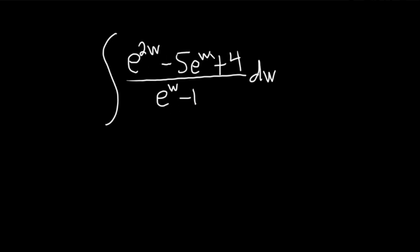So you'll notice that up here we really have a quadratic equation in e to the w. You can think of this as e to the w squared minus 5 e to the w plus 4, right? Because e to the w squared, the properties of exponents say that you just multiply the 2 and the w. So 2 times w is 2 times w.